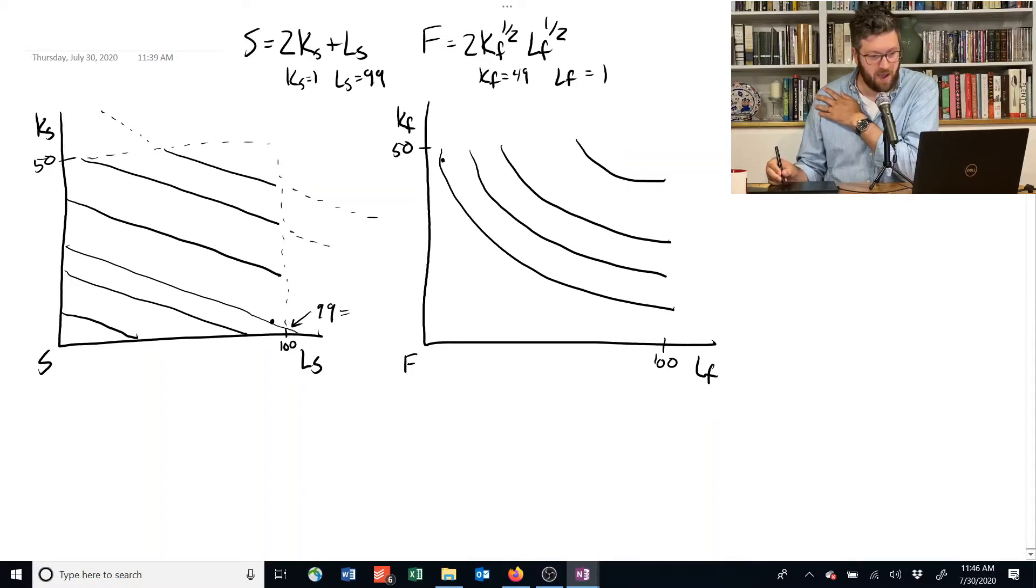If you had this much labor, you could in fact produce in these things that these dashed parts of the isoquant, but there's just not that much labor in this economy. And so I've just sort of left them out.